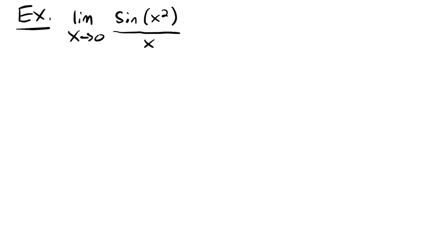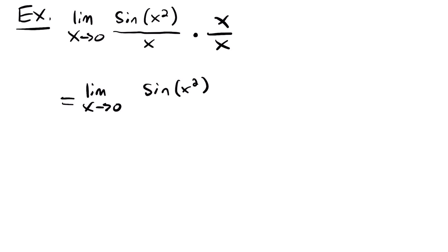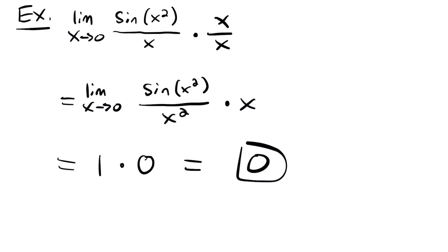Next, we're going to look at the limit as x approaches 0 of sine of x squared divided by x. Since it doesn't matter what is inside your sine function as long as it's also on the bottom, our special limit applies. In this case, we want x squared on the bottom since we have x squared inside our sine function. So let's multiply by a form of 1, which is x over x. We'll have the limit as x approaches 0 of sine of x squared over x squared, times x. This gives us 1 times 0 as x approaches 0, so our answer is 0.